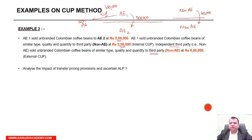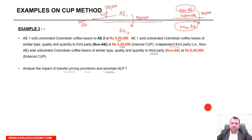This is your internal CUP and this is your external CUP. Why is it external? Because here there are two unrelated parties. Analyze the impact of the transfer pricing provision and ascertain the ALP. In this case, the price charged in the controlled transaction is less than the price for the internal CUP as well as the price from the external CUP.